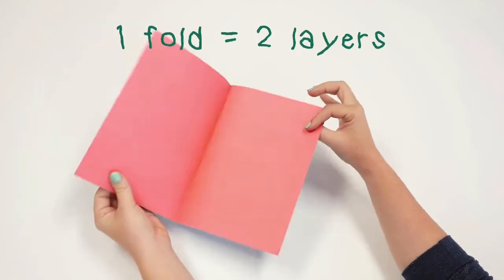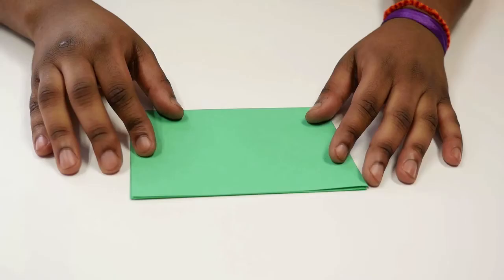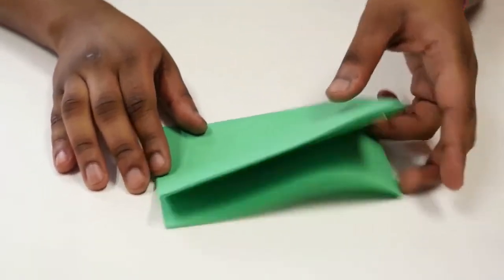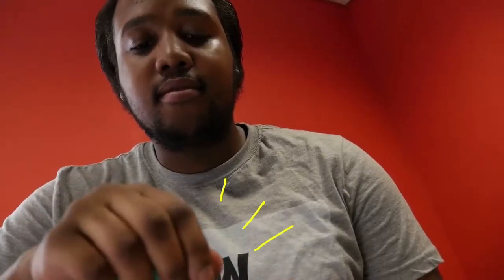One fold equals two layers, and the thickness becomes 0.2 mm. Fold it a second time, and you have four layers with a thickness of 0.4 mm. Keep folding the paper.